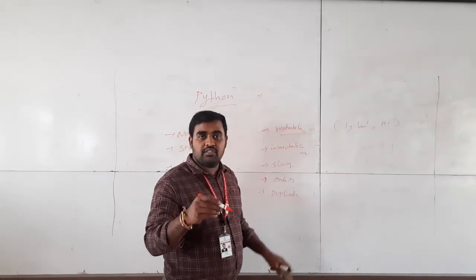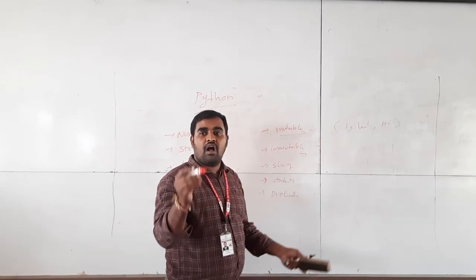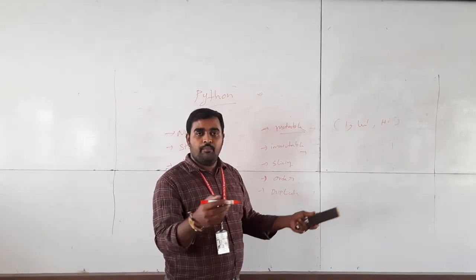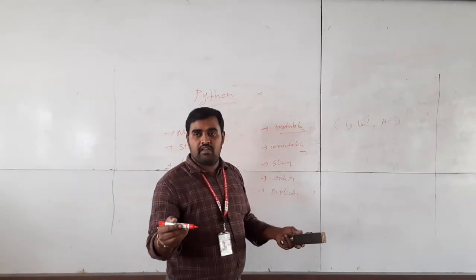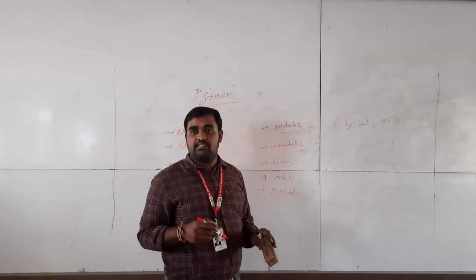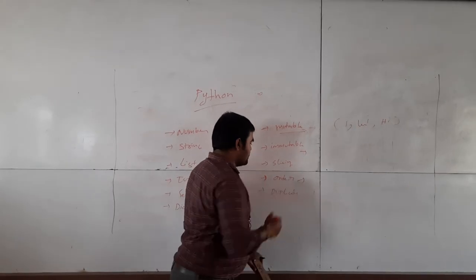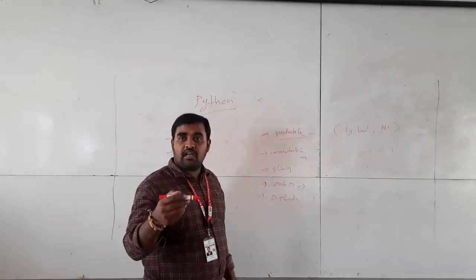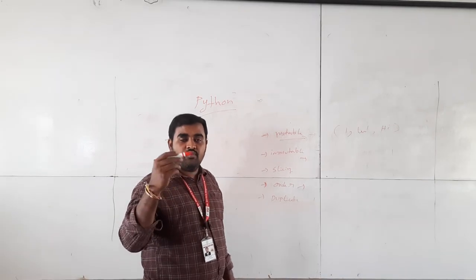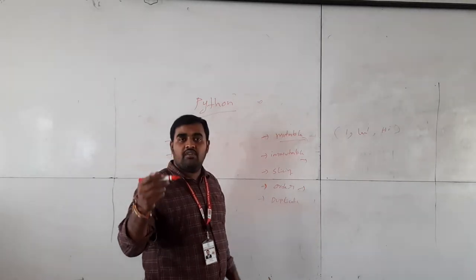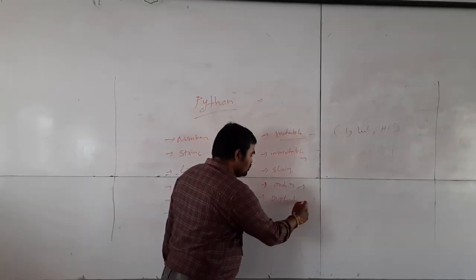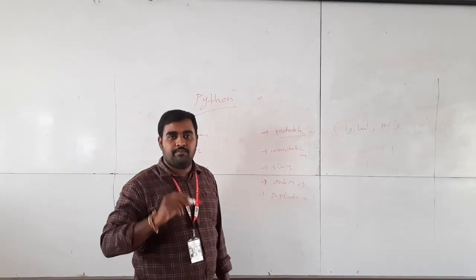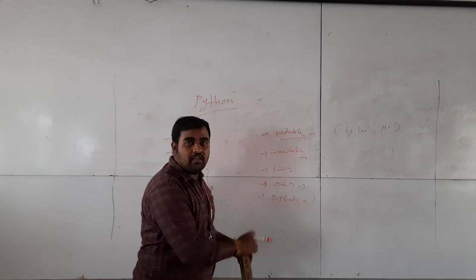Next one is slicing. When you are going to use slicing, it follows an order. Without order, you cannot extract any substring. You access substrings by using the index concept. But if our data type does not follow order, you cannot use slicing and cannot access the substring. Order means if you give elements in one order, the result also comes in the same order. If the result shows a different order, that means it does not follow order. Next is duplicates — the same element given two or three times. Some data types accept duplicates and some do not.